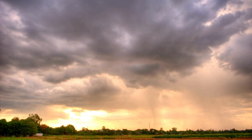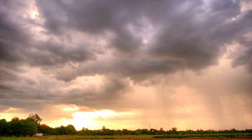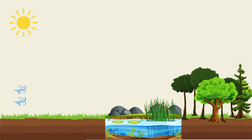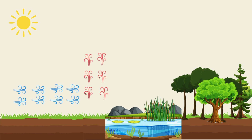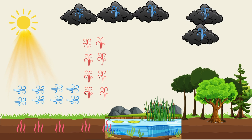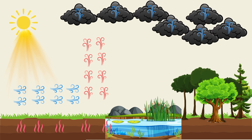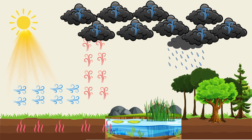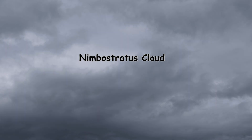Now let us see how these Nimbus clouds are formed. Air flowing near the ground or water bodies warms up due to heating of the surface because of the sun's rays. This creates water droplets or ice crystals which form invisible and visible clouds. As these droplets grow larger and heavier, gravity pulls them down as precipitation.